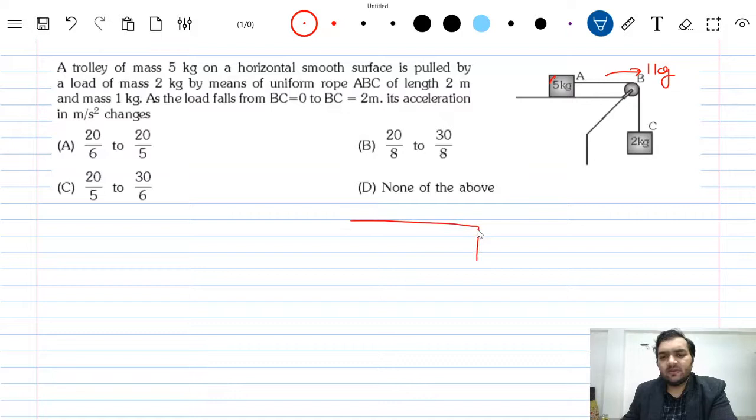Then what will be the acceleration? What is the total mass? 5, 1, and 2. What is the external force? The external force is 2g. We know that the acceleration in such a system is given by net external force divided by total mass: 5 plus 1 plus 2.